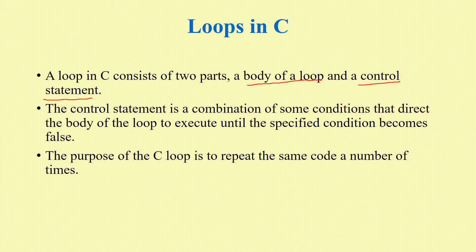The control statement is a combination of some conditions that direct the body of the loop to execute under a specified condition. When the condition becomes false, execution stops. The condition is true while the loop runs.